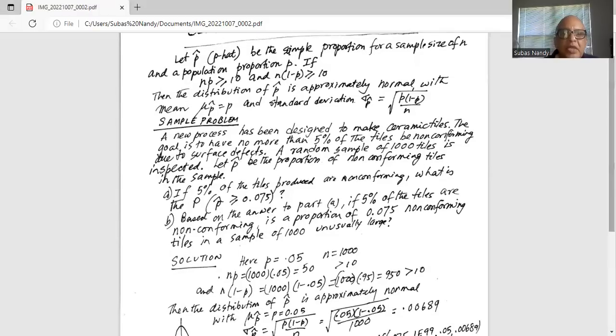Here p population proportion is 0.05, n is 1000 sample size. n times p is 1000 times 0.05 equals 50, which is greater than 10. Similarly, n times 1 minus p is 1000 multiplied by 0.95 equals 950, that is also greater than 10.